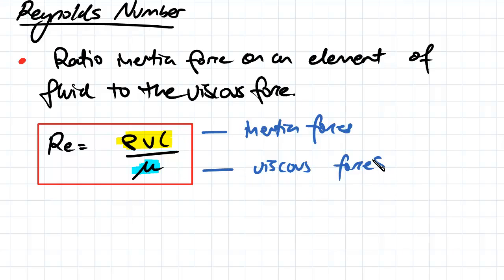So it does come up, you may be asked what is Reynolds number, a description, and it's the ratio of inertia force on an element of a fluid to the viscous forces. So always thinking velocity as inertia forces.